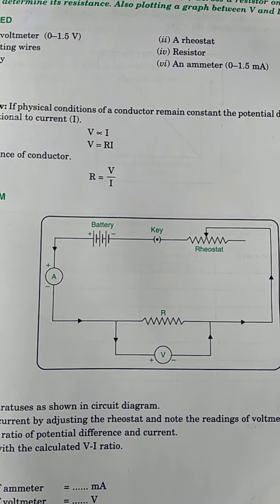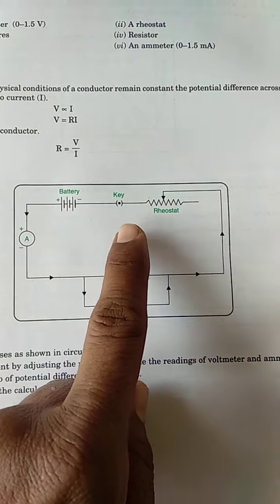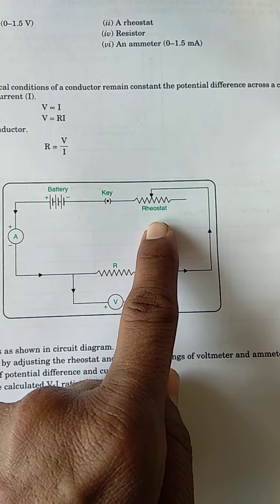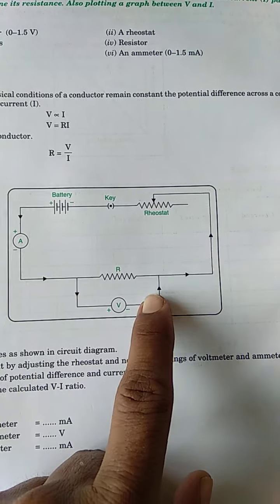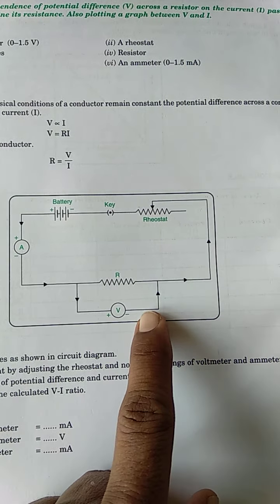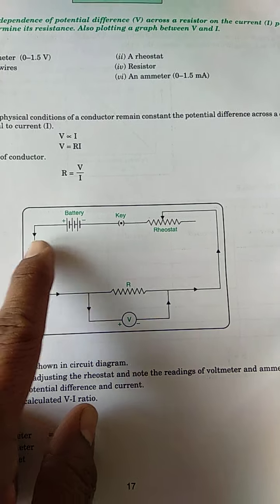You can see in this circuit diagram here, this is a battery, this is a key, this is a rheostat which gives us variable resistance. Then here is one resistance and we know that voltmeter is connected in parallel, yes, ammeter in series. This is a complete circuit.